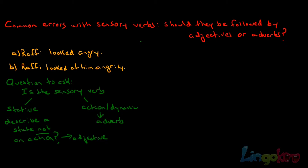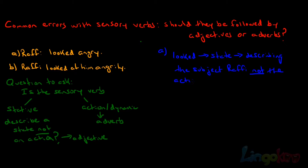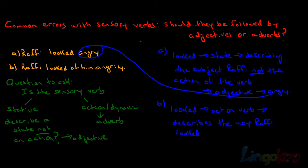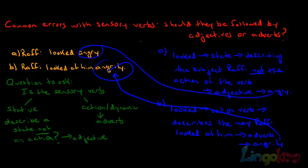Let's revisit our example. In 'Rafi looked angry,' looked is a state describing the subject Rafi, not an action — so we follow the sensory verb with an adjective. In 'Rafi looked at him angrily,' looked is an action verb describing the way Rafi looked at him — so we follow it with the adverb angrily.